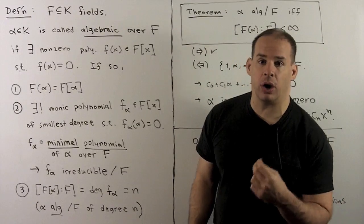When this is the case, we've proved the subfield of K generated by alpha and F is just F adjoined alpha — polynomials in alpha with coefficients in F. Then there exists a unique monic polynomial with coefficients in F of the smallest degree with alpha as a root. We call this polynomial the minimal polynomial of alpha over F.